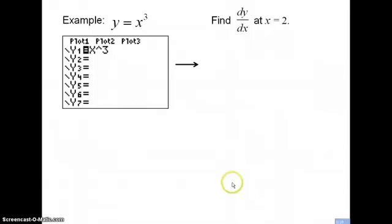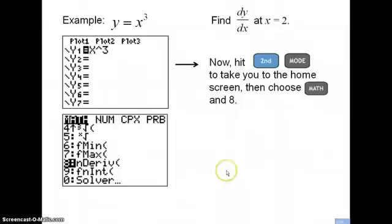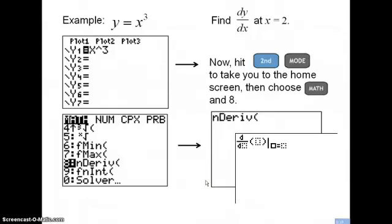Next, hit Second then the Mode button to go back to the home screen. Then choose your Math button. After you choose Math, you can either scroll down using the arrow keys or just hit the number 8, because the eighth choice on that screen is the nDeriv program, which finds the derivative at a given point. Once you've chosen nDeriv and hit 8, this is what your home screen should look like. Pause the video if you need to walk through these steps.